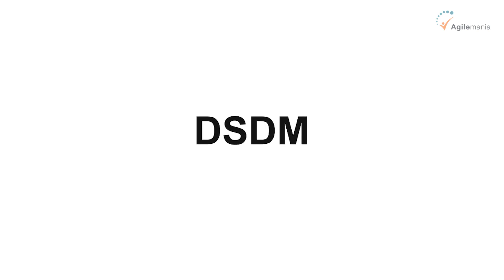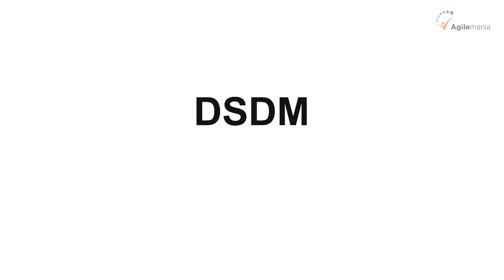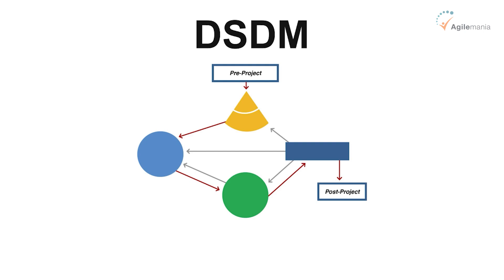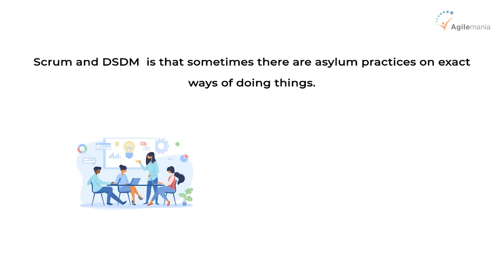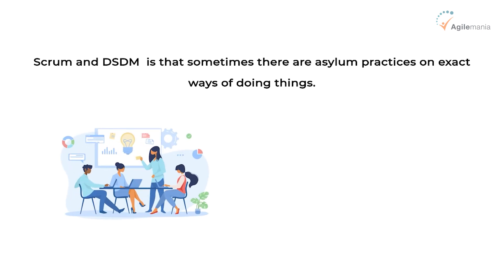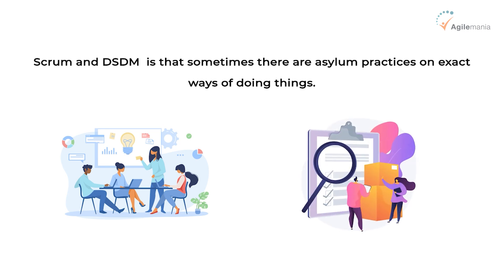There is another framework called DSDM, which is really interesting and actually has a lot more within it. It has a lot more meetings you can have, a lot more processes, and is often used by organizations who are quite keen on process, quite risk-averse, and keen to make sure it feels like there's a lot of process going on. It can be a fantastic framework in the right environment as well. The thing you get with frameworks like Scrum and DSDM is that sometimes they are silent on exact ways of doing things — and that's not a bad thing, because a lot of it is about allowing the team to find its own best ways of doing things, bringing in its own practices, inspecting and adapting over time, and being fundamentally agile.